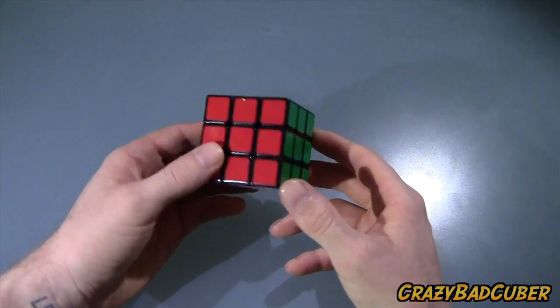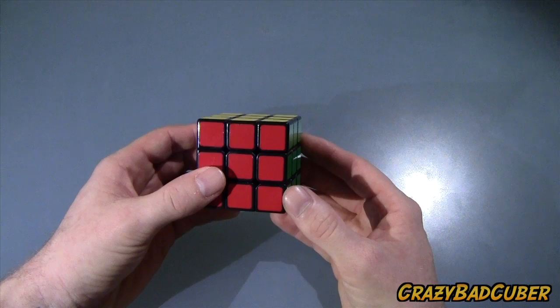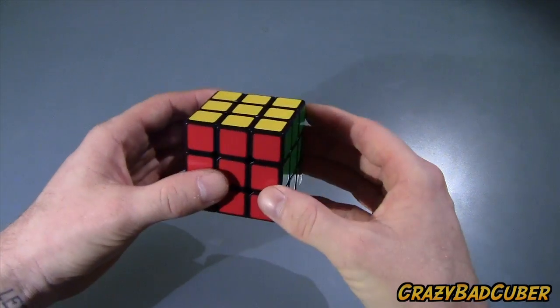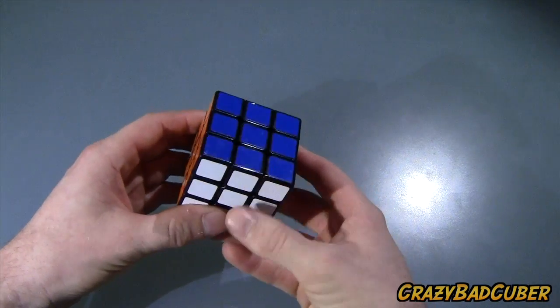You have clicked on Notation. What Notation is, is basically the language of the Rubik's Cube. We actually write it out and we read it and we interpret that into the movements of the cube.